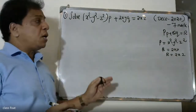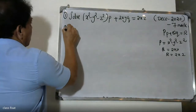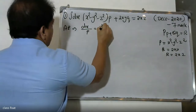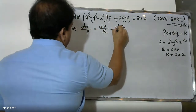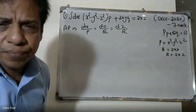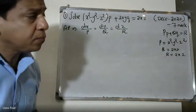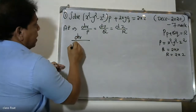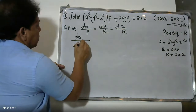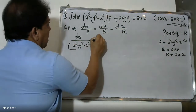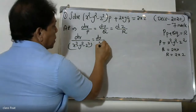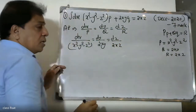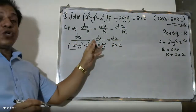The auxiliary equations are set up as dx/P = dy/Q = dz/R, that is: dx divided by (x² - y² - z²), dy divided by 2xy, dz divided by 2xz. This is the standard form for solving Lagrange's linear equation.